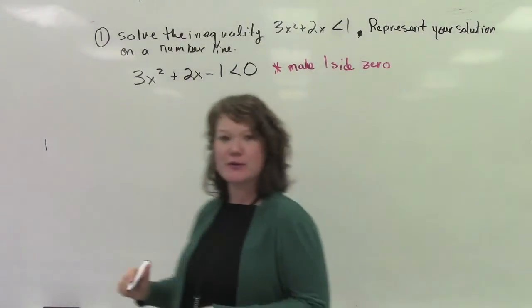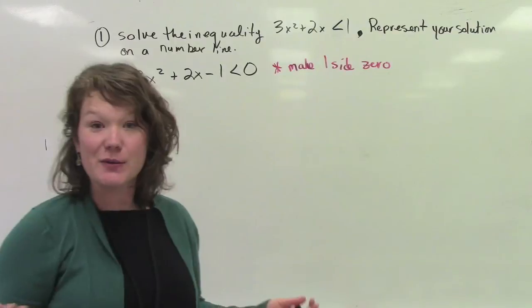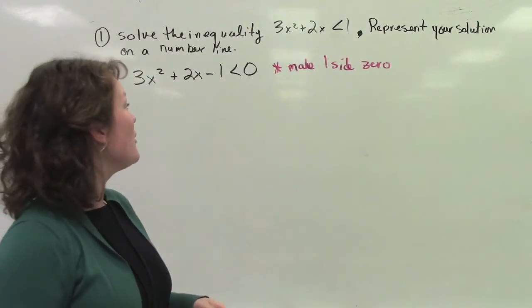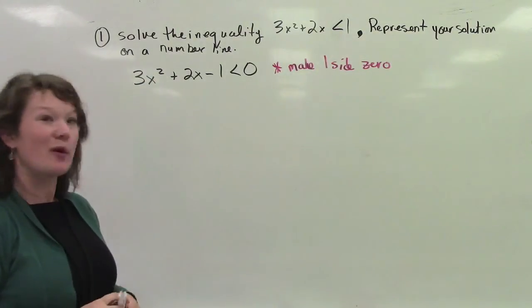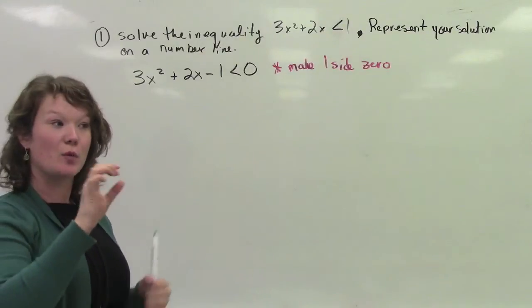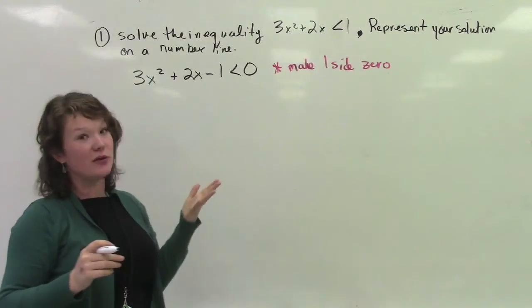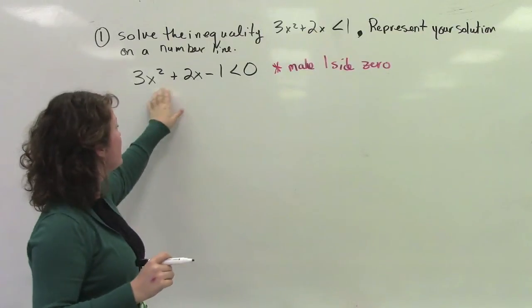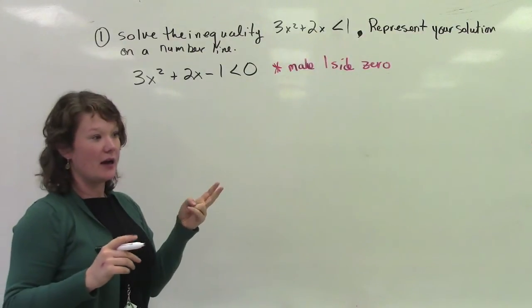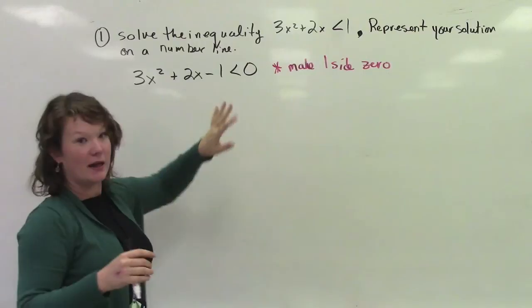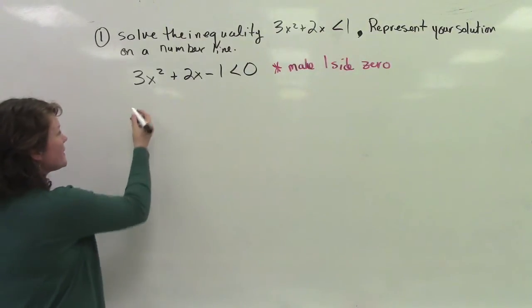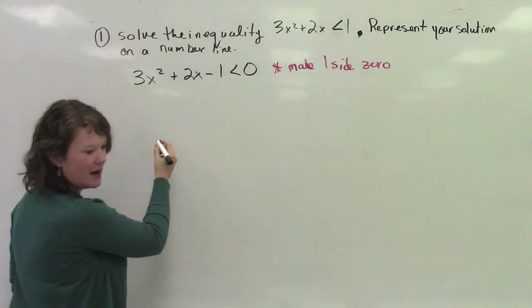The next thing that we want to do is we want to find those critical values. We want to figure out where x equals 0. We want to find out where the x-intercepts would be if this parabola would have two variables, namely x and y. So where are the 0s to the solution? Well, let's factor it.